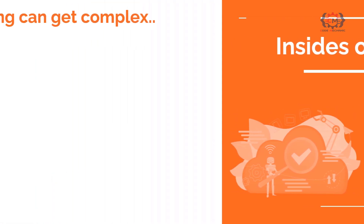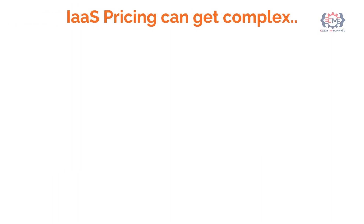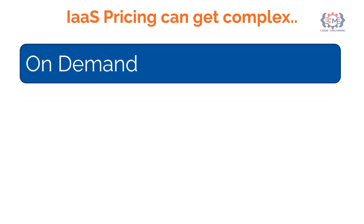However, I also want to point out that the cost of infrastructure as a service can be complex. They have what they refer to as on-demand pricing. On-demand pricing is the traditional utility-based, consumption-based pricing model, which is what you often think of when you think of IaaS cloud pricing. You pay for the computing capacity by the hour with no long-term commitments or upfront payments.